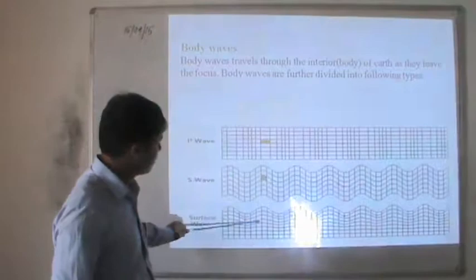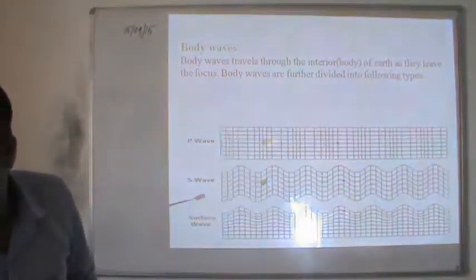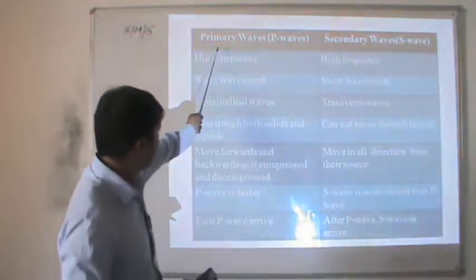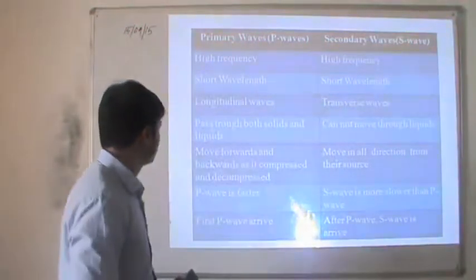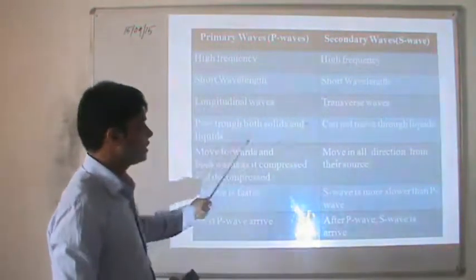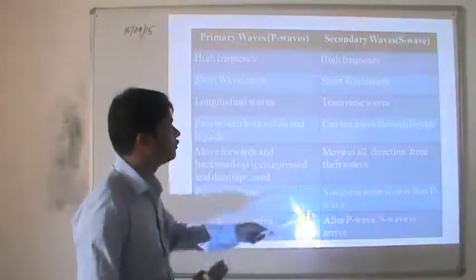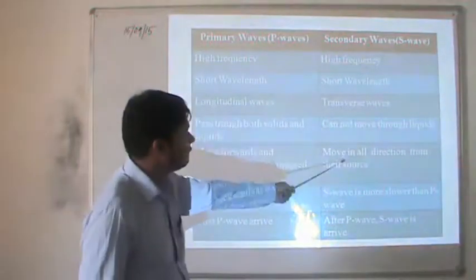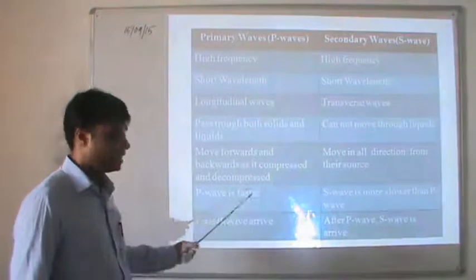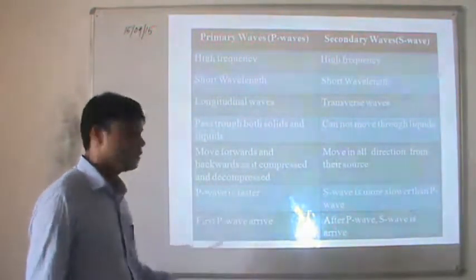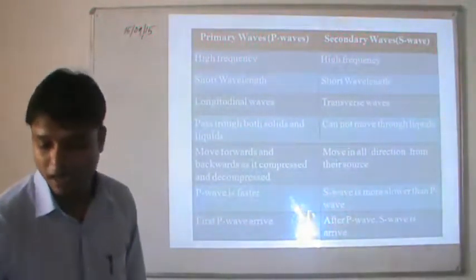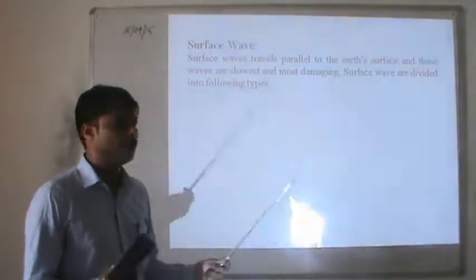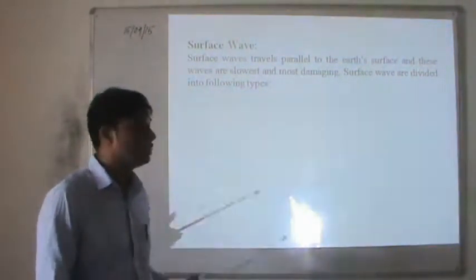Surface waves travel on the surface up to some depth. Primary waves are longitudinal and can pass through solids and liquids, while secondary waves are transverse and cannot move through liquids. Primary waves move forwards and backwards, compressing and decompressing, while secondary waves move in all directions. P waves are faster than S waves and arrive first when an earthquake strikes.